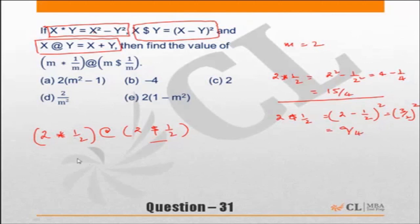In other words, this expression which was given to us is nothing but 15 by 4 at the rate 9 by 4. As per the equation, x at the rate y is nothing but x plus y, so this should be 15 by 4 plus 9 by 4. 15 plus 9 is 24. 24 by 4 is equal to 6.